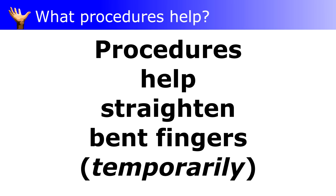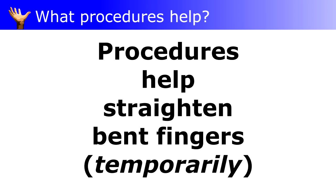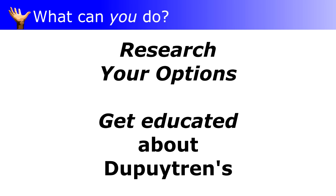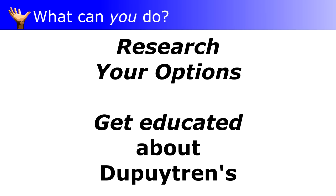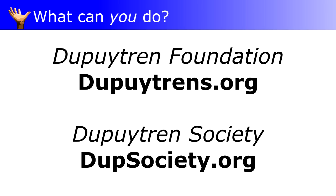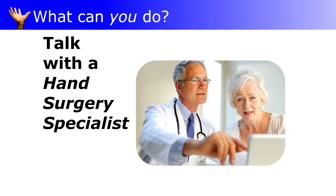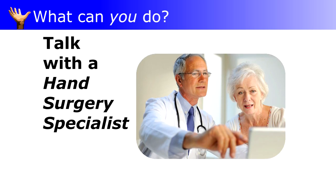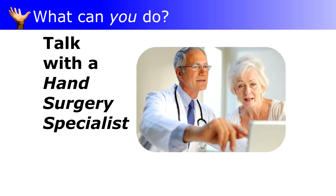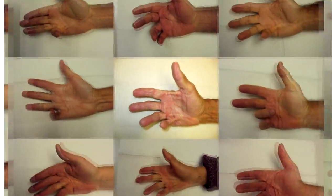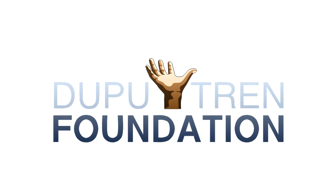but they don't cure it. For most people, it comes back over months or years. So what can someone with Dupuytren's do? Well, first learn about it. The websites of the Dupuytren Society and the Dupuytren Foundation are great starting points. Get evaluated in person by a hand surgery specialist and talk to them. And the big picture is to support the Dupuytren Foundation, which is working for everyone with Dupuytren's to find a cure.